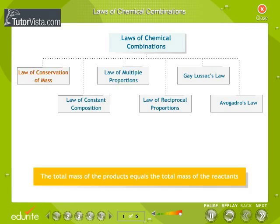The law of conservation of mass states that the total mass of the products equals the total mass of the reactants. The law of constant composition states that the elements combine in the same proportion by mass.